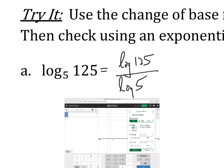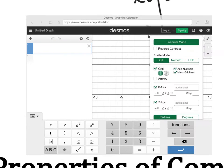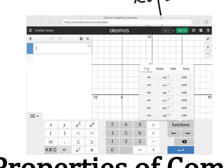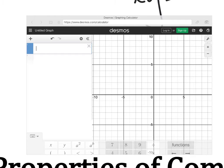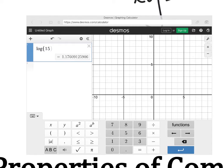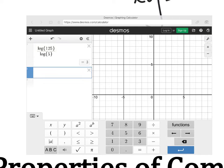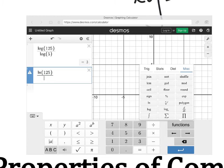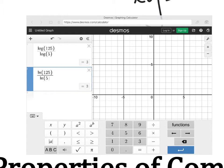So using Desmos here, we can say log, which is under functions miscellaneous, is the log of 125, and then close that, divided by the log of 5, and that is 3. That's what we expected. Again, if we wanted to use natural log of 125, which natural log is going to be used more often. Notice it's the same thing.